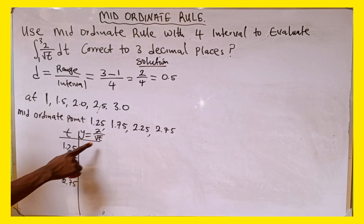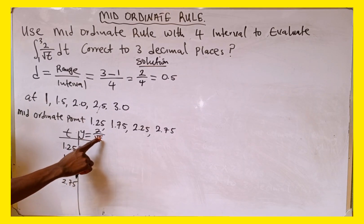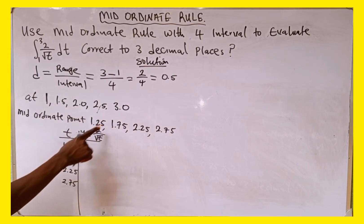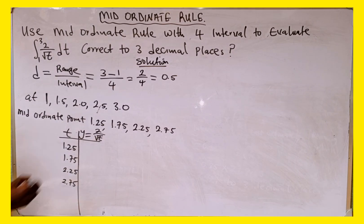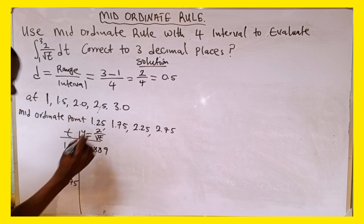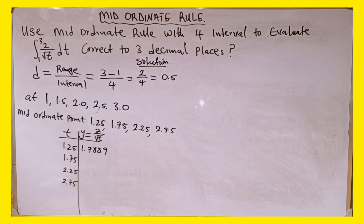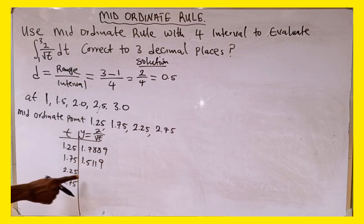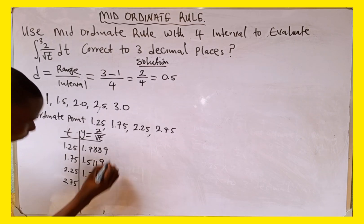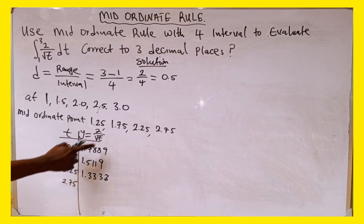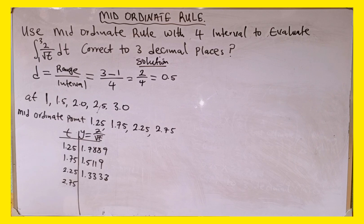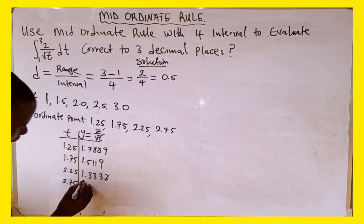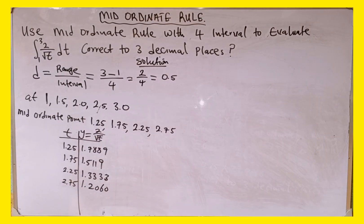Substituting each t value into y = 2 / sqrt(t): for t = 1.25, y = 1.7889; for t = 1.75, y = 1.5119; for t = 2.25, y = 1.3333; and for t = 2.75, y = 1.2060. We have successfully filled the y column of the table.